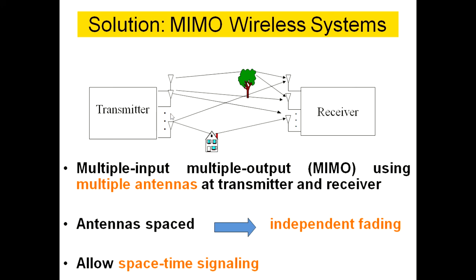Whatever signal is transmitted, it propagates through free space and takes multiple paths to reach the destination. In between the transmitter and receiver you will have a number of obstacles like trees and tall buildings.